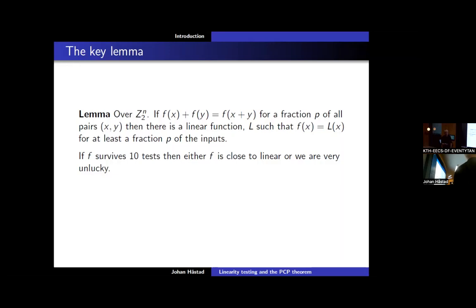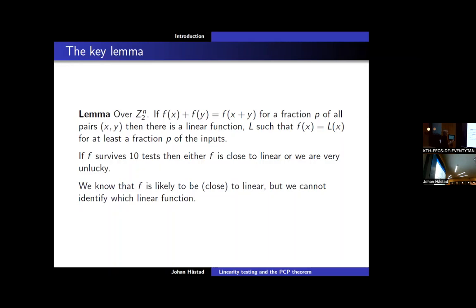This says the linearity test is very robust. If it always succeeds, it's a linear function; but the robustness property says that if it almost always accepts, it's almost a linear function. If you try 10 tests independent of the size of the function, either f is close to linear or you're extremely unlucky. Once we conclude this we know f is close to a linear function, but we don't know which linear function — we just know abstractly that it's probably close to one.